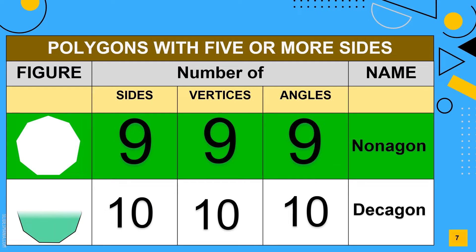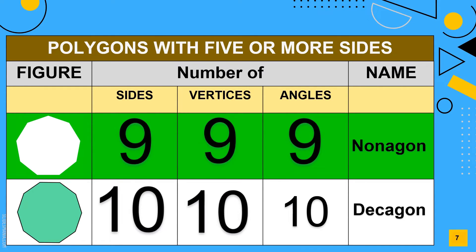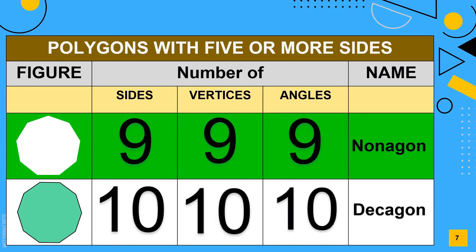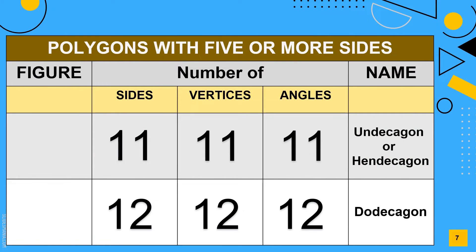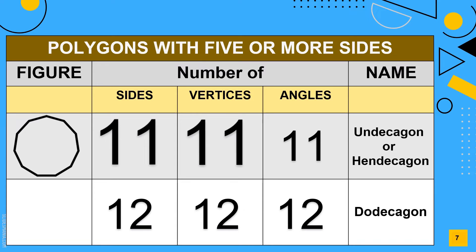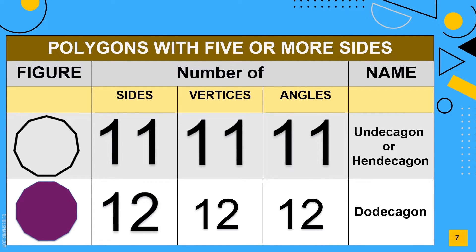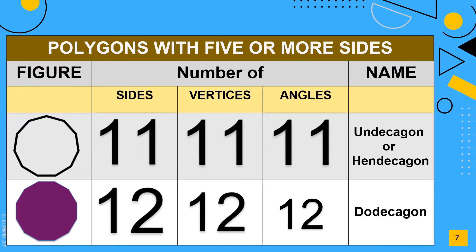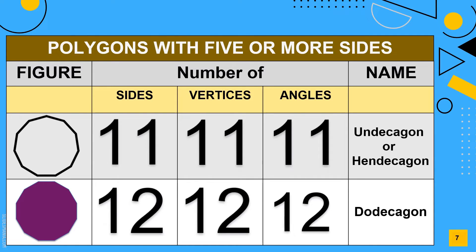A decagon has 10 sides, 10 vertices, and 10 angles. A hendecagon has 11 sides, 11 vertices, and 11 angles.